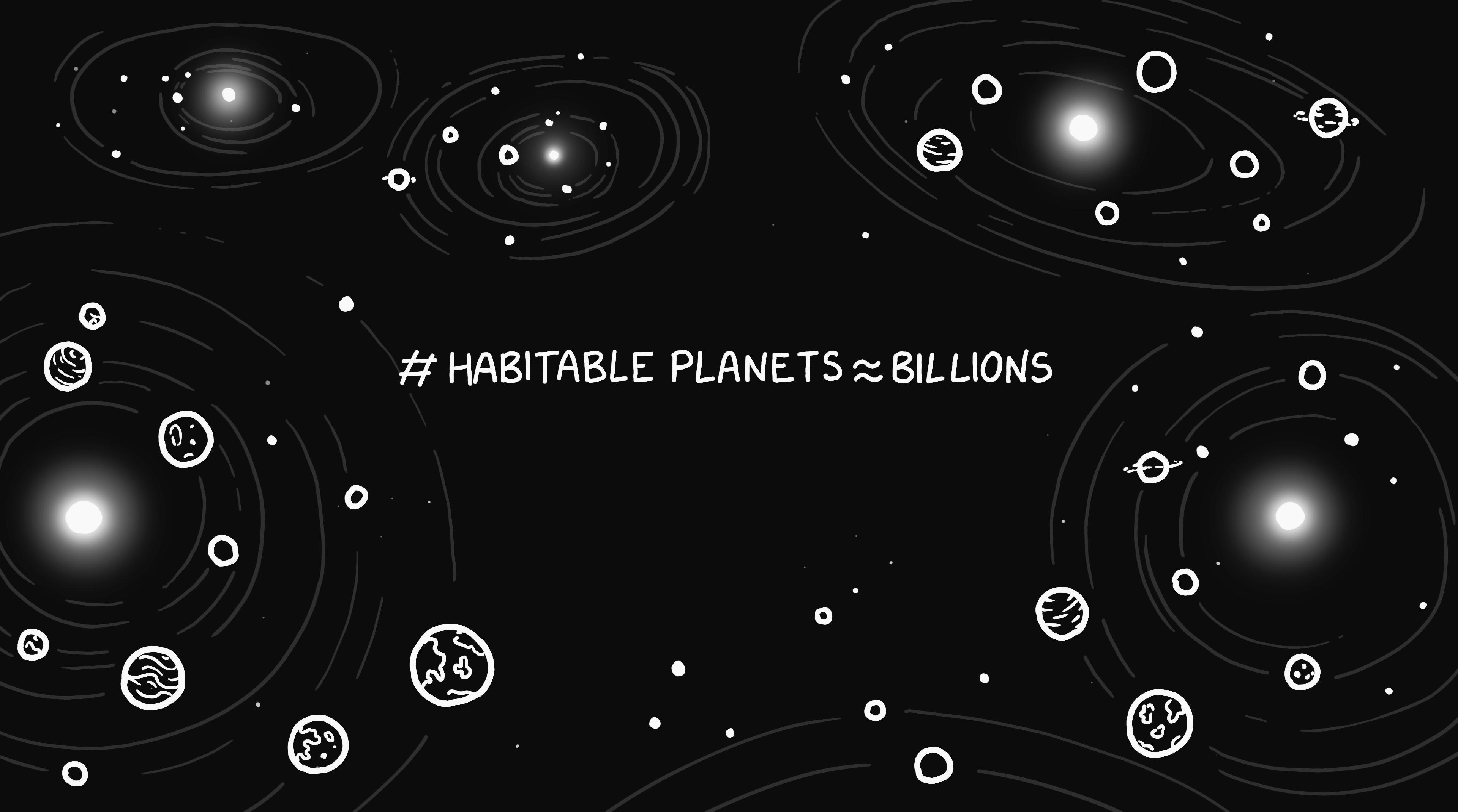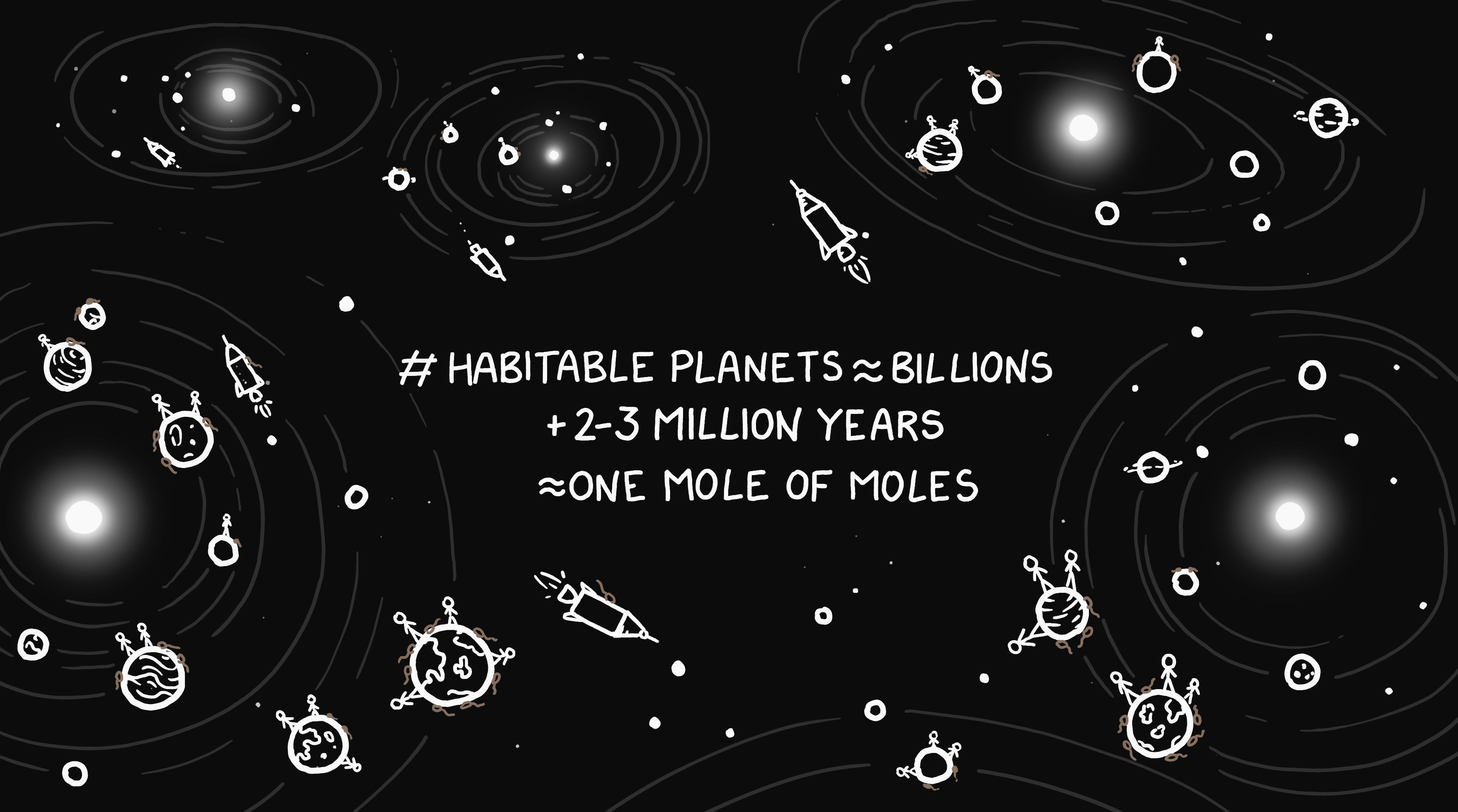There might be a billion habitable planets in our galaxy. If we colonize them, we would certainly bring mice and rats with us. If just one in a hundred were populated with small mammals in numbers similar to Earth's, after a few million years, not long in evolutionary time, the total number which had ever lived would surpass 6.022 times 10 to the 23rd.